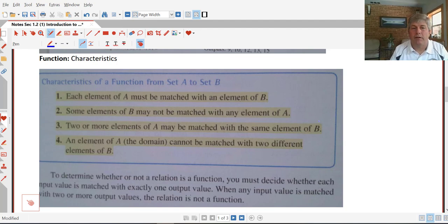Now two or more elements of A, or inputs, may be matched with the same element of B. So if we have our inputs and our outputs, if we have an x and a y, they could both go to z. That's okay. That's legal. That's a function.